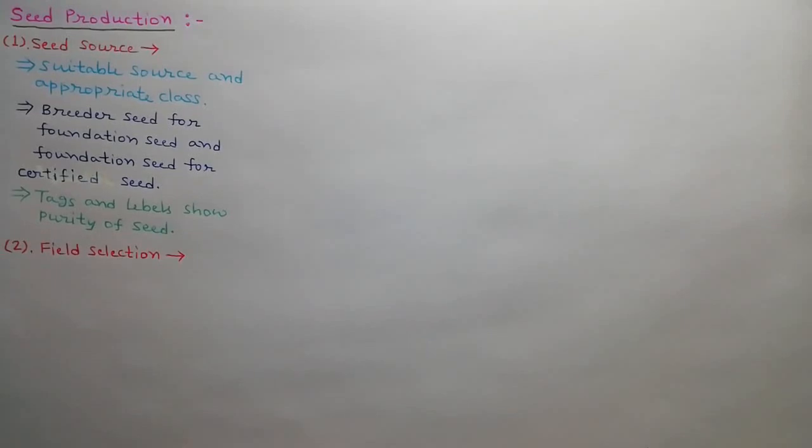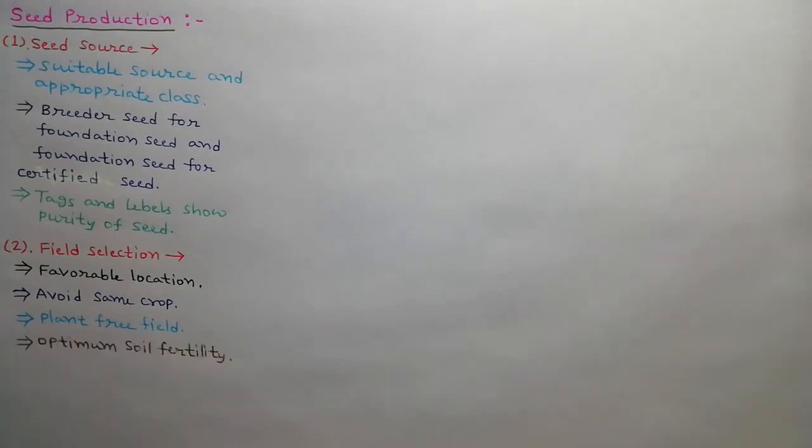Second step is field selection. Location of field must be according to isolation requirements. Same crop should not be grown in the field in last year. Field must be free from volunteer plants and other weeds. Soil fertility must be according to seed crop. Field soil should be free from soil borne insects and diseases.